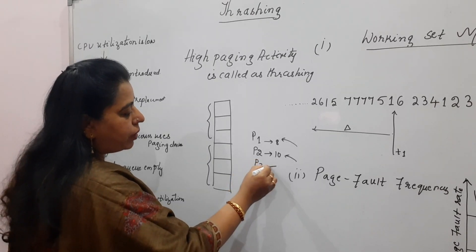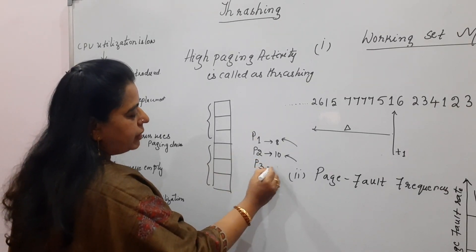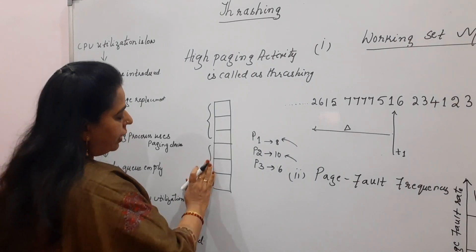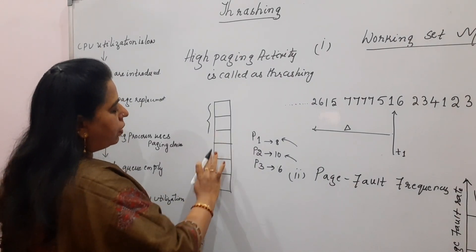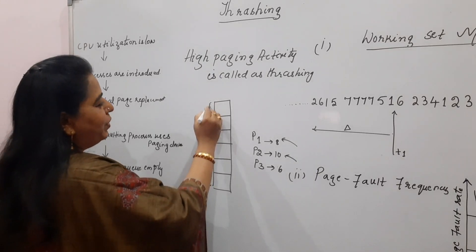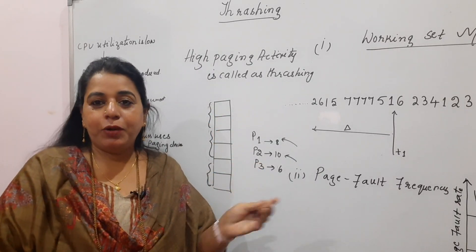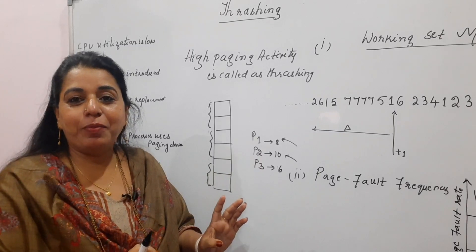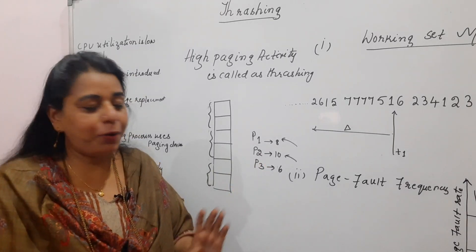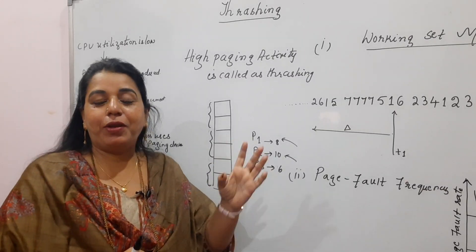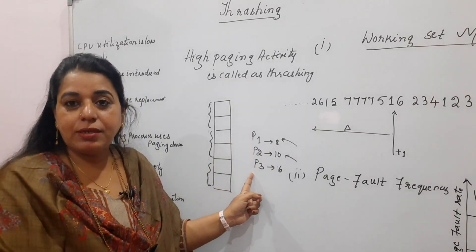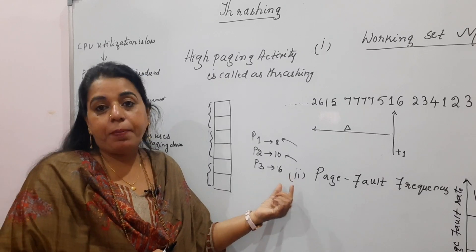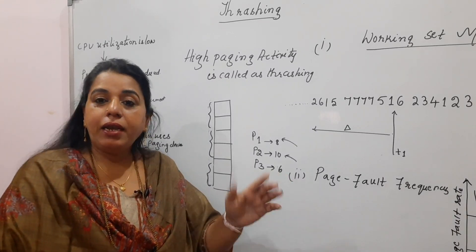Now assume one more process, P3, is loaded with, say, 6 pages. Frames are also allotted to P3 — let us take P3 got 2 frames, P2 got 2 frames, and P1 also got 2 frames. Initially P1 was happy because it had all the frames. When P2 came, fewer frames went to P1; when P3 came, frames were split further. All three processes will experience frequent page faults because they have fewer frames but comparatively more pages.